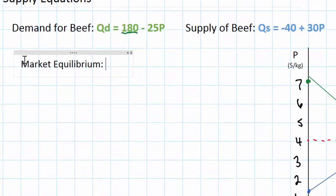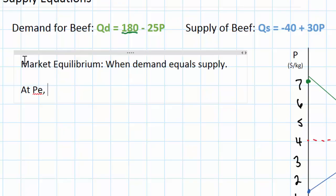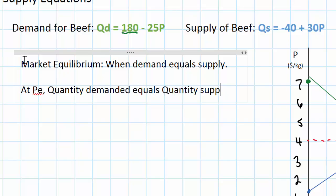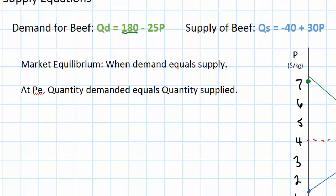Let's review what market equilibrium is. In a market for a particular good, equilibrium is achieved when demand equals supply. At the equilibrium price PE, quantity demanded equals quantity supplied. Knowing the definition of equilibrium, all we have to do is set the demand and supply equations equal to each other and calculate the price at which the two are equal.